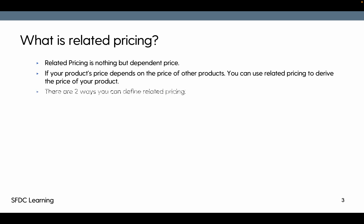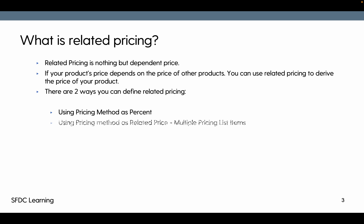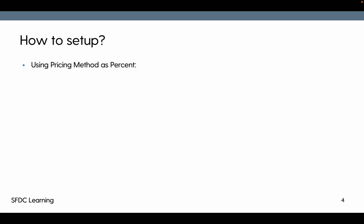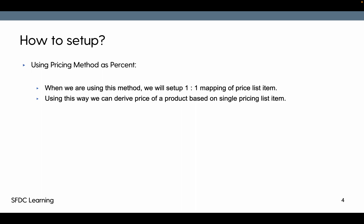There are two ways you can define related pricing. The first is using price method as 'Percent on Price List Item.' Using this method, we set up a one-to-one mapping of price list items, meaning a product's price is dependent on one product only. This way we can derive the price of a product based on a single price list item.